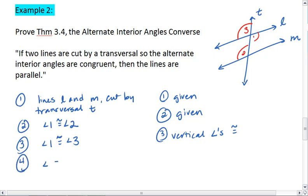So, we know then that angle two is congruent to angle three, and we know this either through substitution or the transitive property.